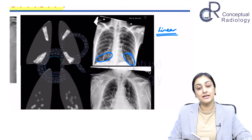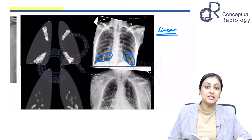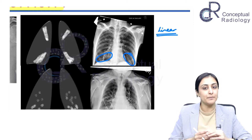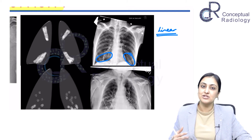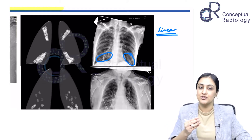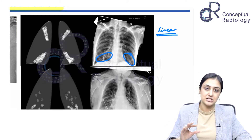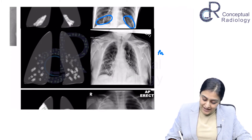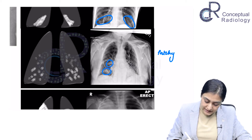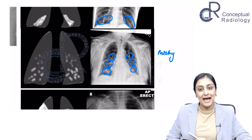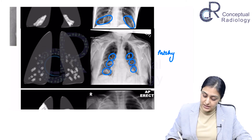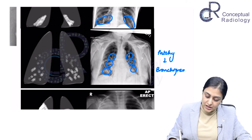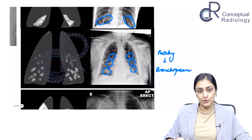These linear airspace opacities could be basal atelectases or basal consolidation, which is present mostly in smokers and elderly patients. Then when we look here, these are our patchy opacities — you can see multifocal opacities in the schematic. These patchy alveolar airspace opacities are something you see very typically in a bronchopneumonia kind of setting, so you think in terms of bronchopneumonia.